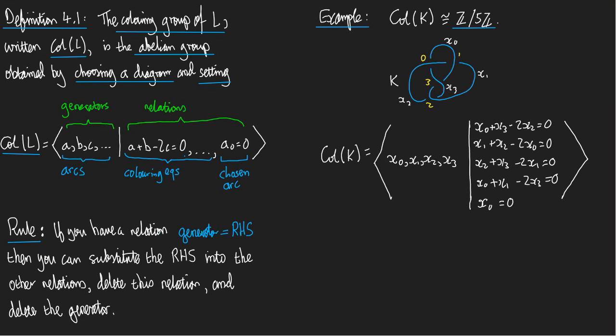Suppose you have a relation of the form generator equals something, and the something in question cannot involve the generator in question, but only the other generators, not involving the chosen generator. Well, if you have such a relation, then you can substitute the right-hand side of the relation into all the others. So you can substitute the right-hand side into the other relations, you can delete this relation, and you can delete the generator.